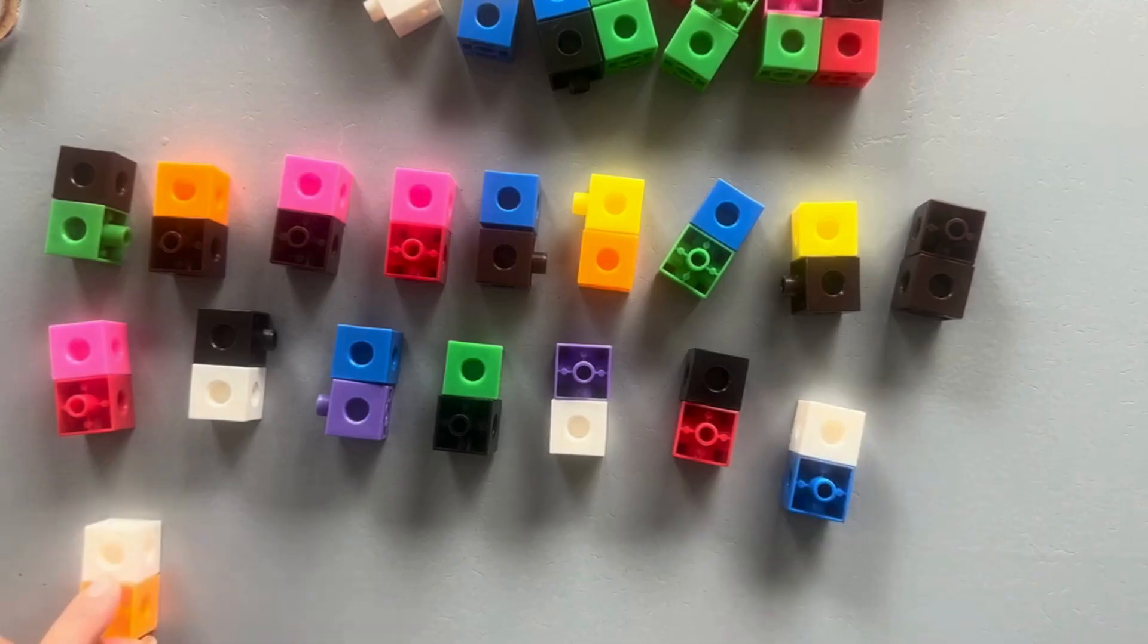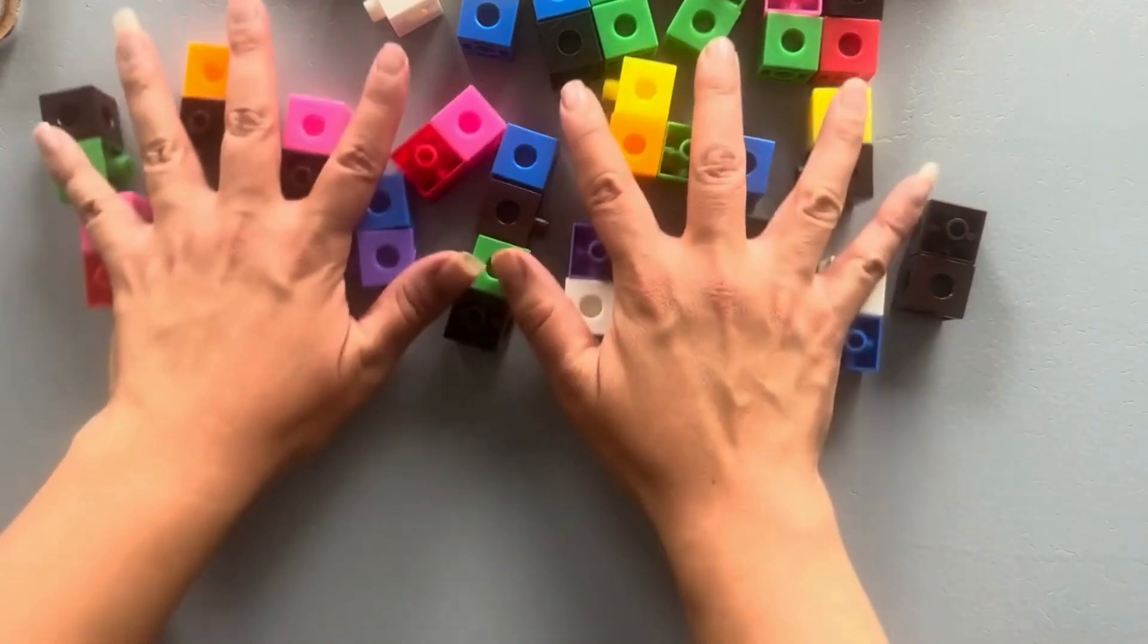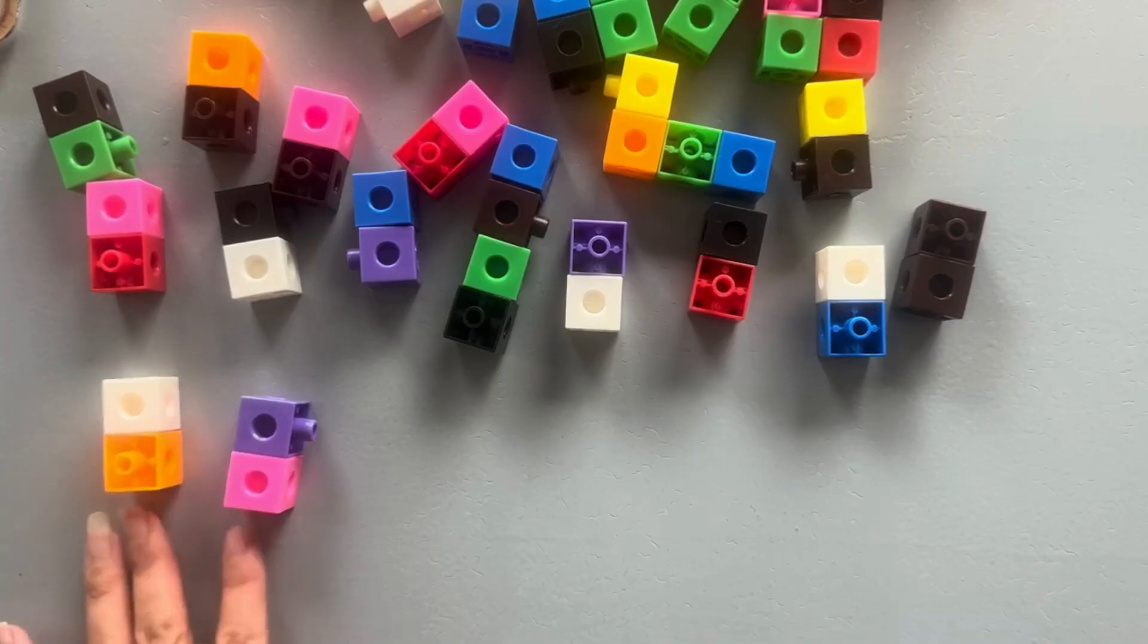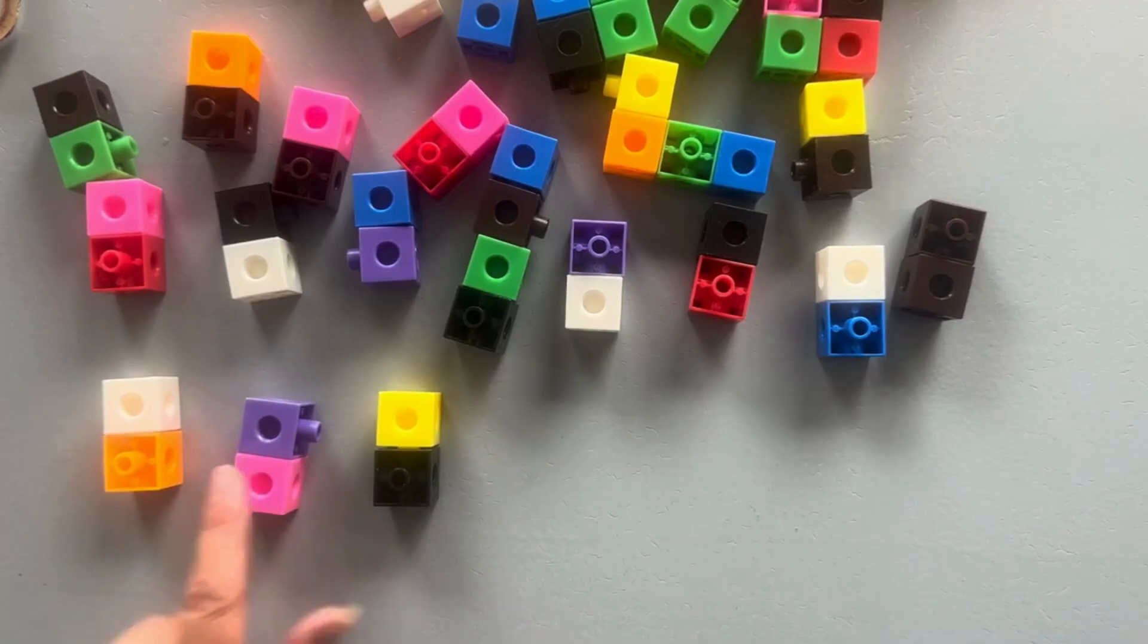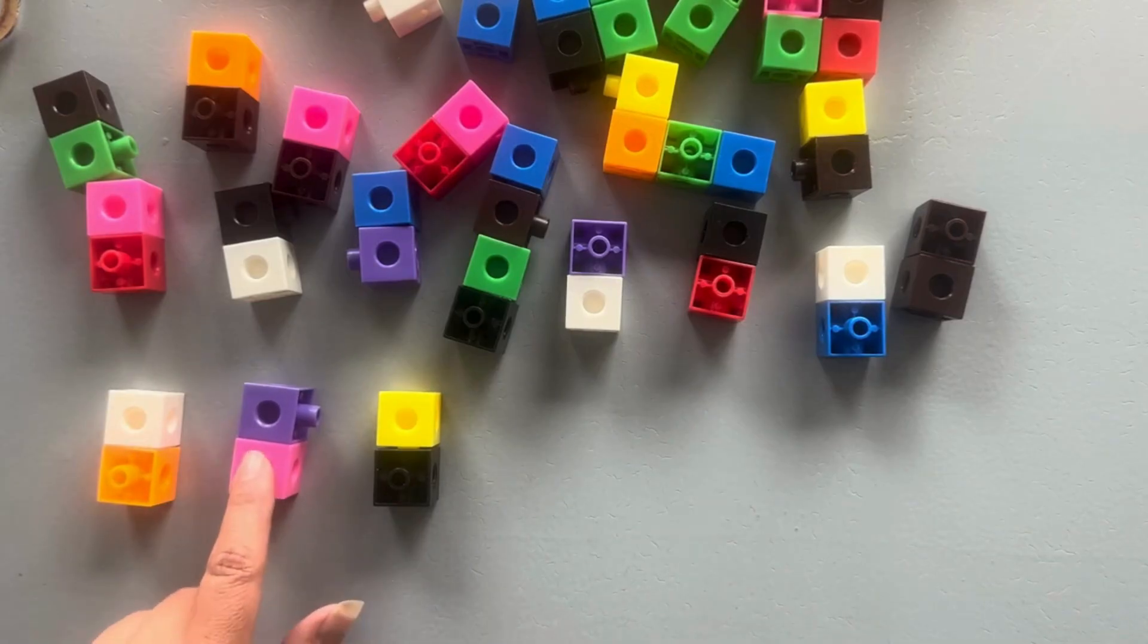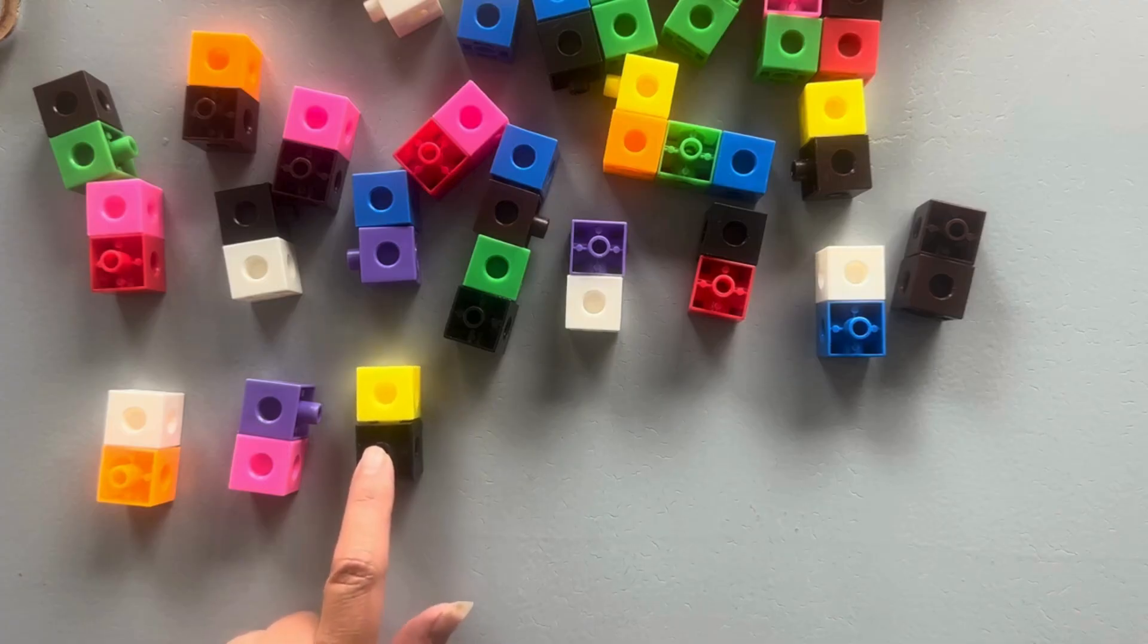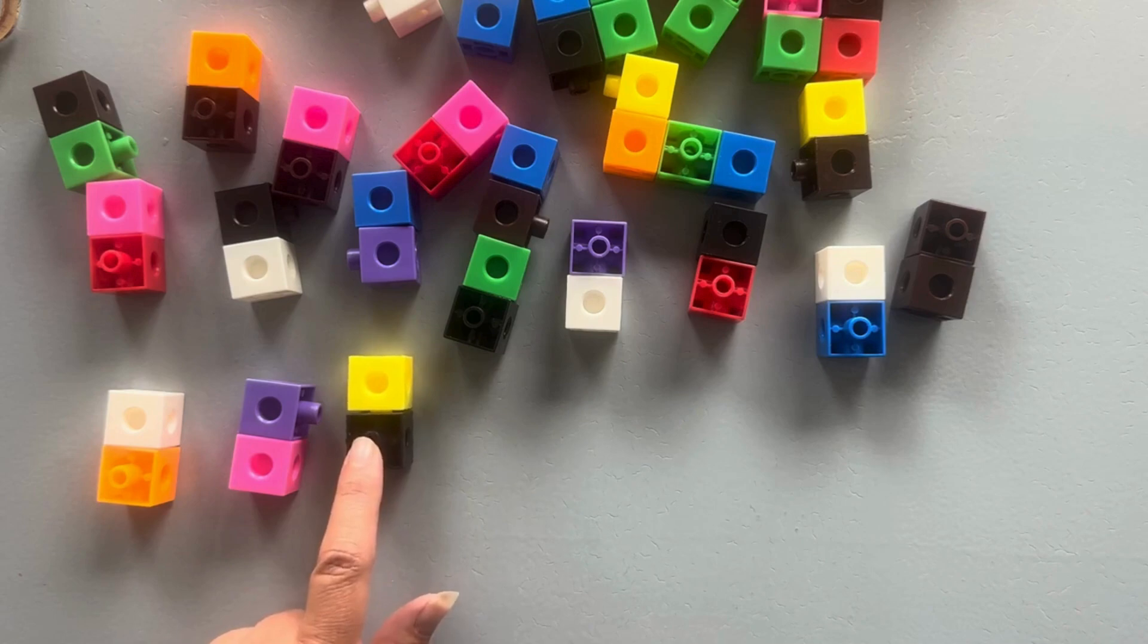And then what's this? Seventy-two. Good. Seventy-four. We're counting by twos, not ones. That's counting by one. So if we're counting by twos, what comes after seventy-two? Seventy-four.